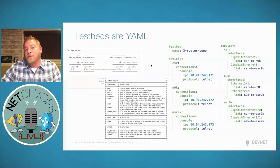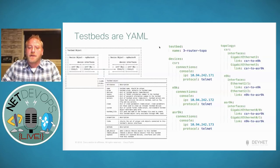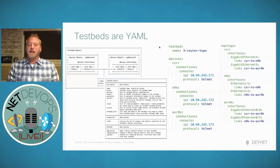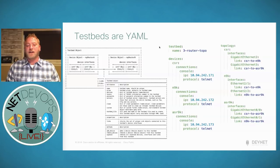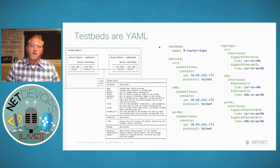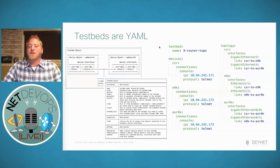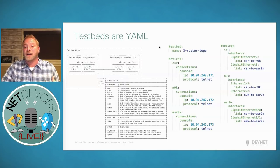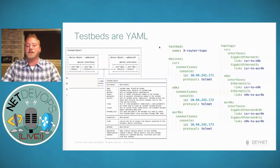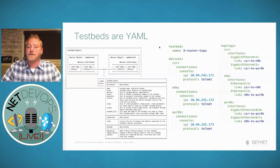The testbeds themselves become a YAML file. If you've worked with Ansible or other open source projects, YAML is something you're probably familiar with. We're describing both the connectivity information — the inventory-related stuff, all the devices in my network, all the connections. You can see in the connections key we have a console connection. We can support multiple, so if a device is accessible via SSH or through a console connection on a terminal server, we can represent all of those various connectivity profiles in the same testbed.